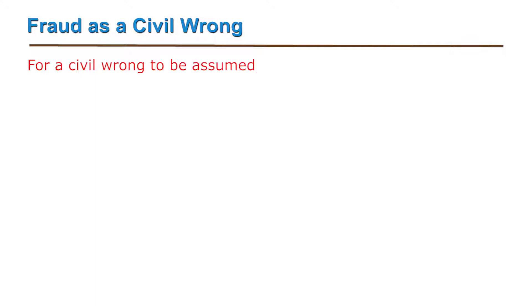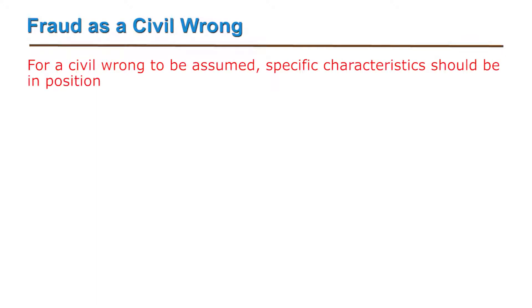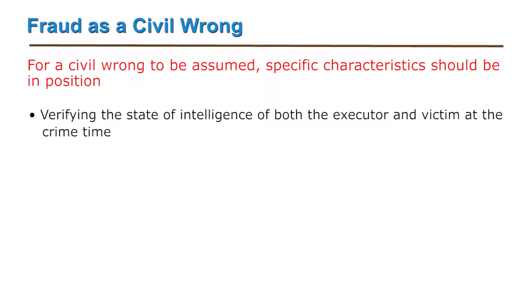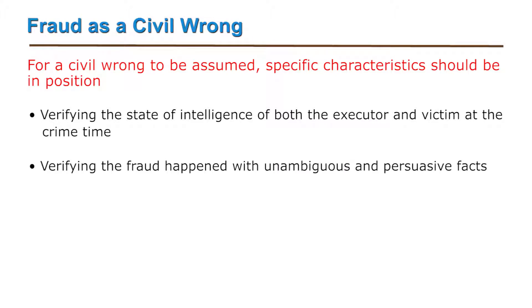Fraud is basically a wrong attitude. The court system considers fraud as a civil wrong, known as a tort. Every jurisdiction has a particular description of fraud; however, commonly it is assumed to be the deliberate misrepresentation of significant information. For a civil wrong to be assumed, specific characteristics should be in position — verifying the state of intelligence of both the executor and the victim, and verifying the fraud happened with unambiguous and persuasive facts.